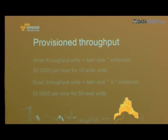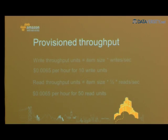It's priced per hour based on provisioned throughput. For writes, up to one kilobyte per write per second gives you one write unit, and you can have millions of those depending on your application need. We charge 0.65 cents per 10 writes. For reads, we have strongly consistent and eventually consistent options — 6.5 cents per hour for 10 read capacity units, where a read capacity unit is 4 kilobytes.